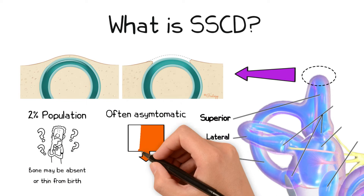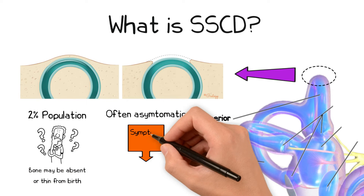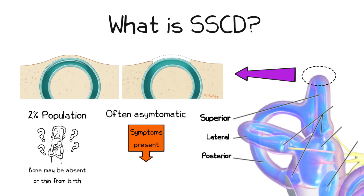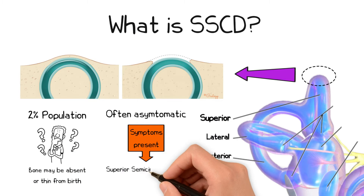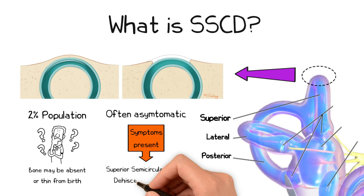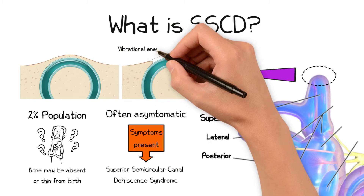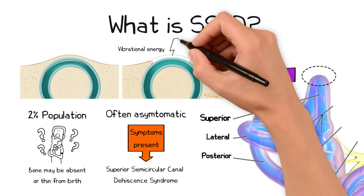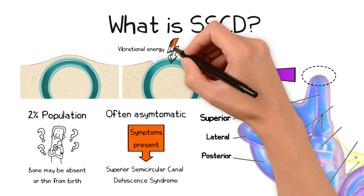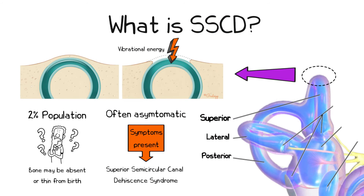When this bony dehiscence results in symptoms, this is called superior semicircular canal dehiscence syndrome. Symptoms are mainly due to excessive vibrational energy entering the inner ear through this third window, causing hearing and balance disturbance.